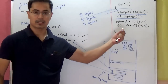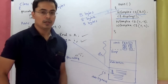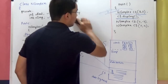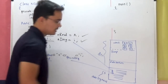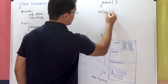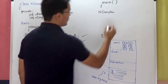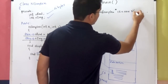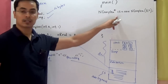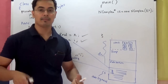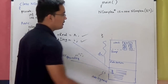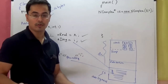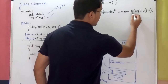Like any other data type, you can create objects using dynamic memory allocation. The syntax is a little bit different. You need a pointer, so: NComplex* C1 = new NComplex(3, 4). This is how you create your object on heap using dynamic memory allocation. You create a pointer C1 and use the keyword new, which is used for dynamic memory allocation in C++, then the class name followed by the parameters signifying we are calling the parameterized constructor.